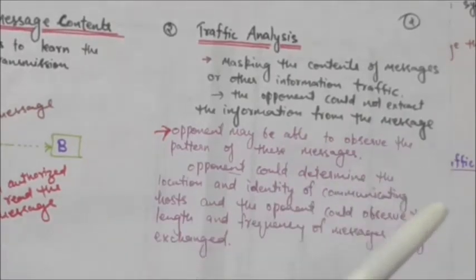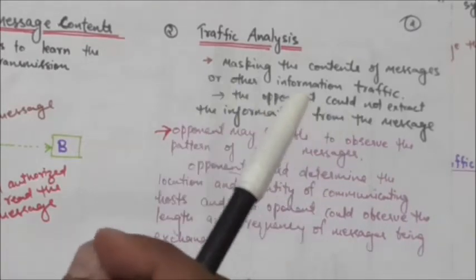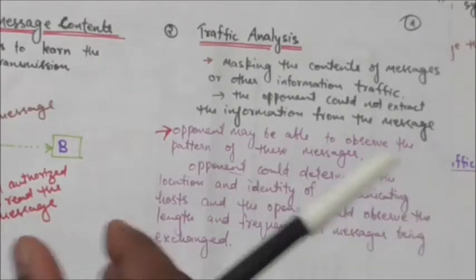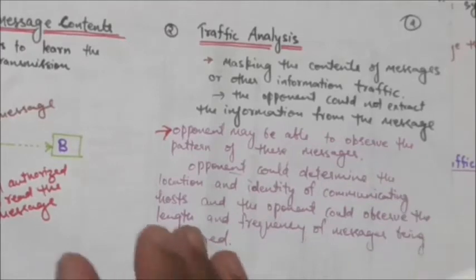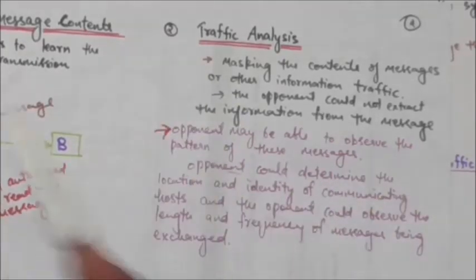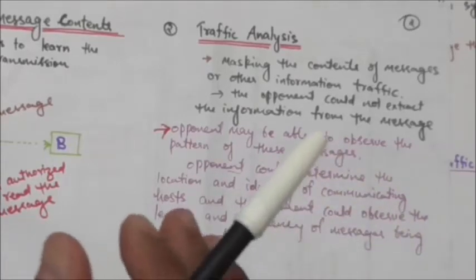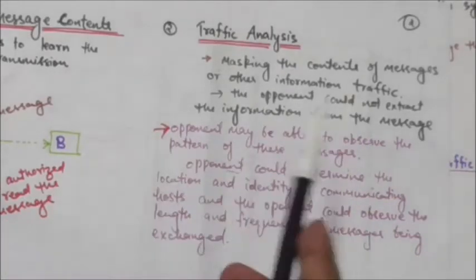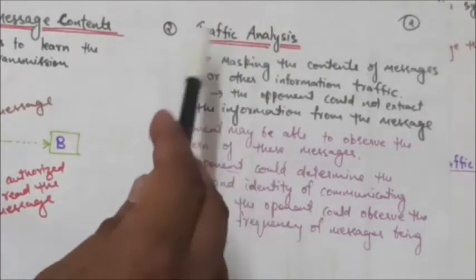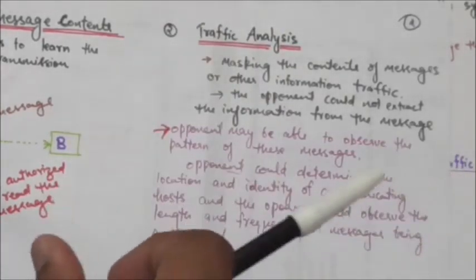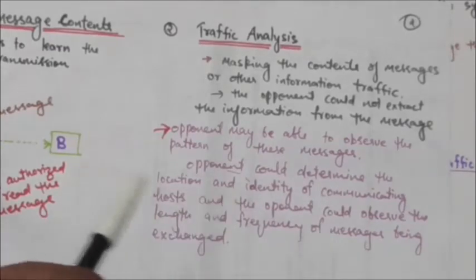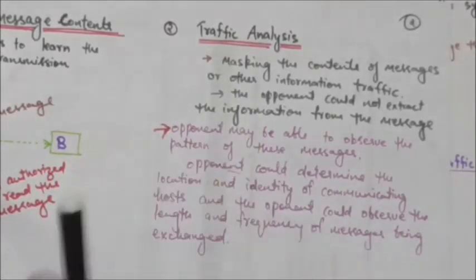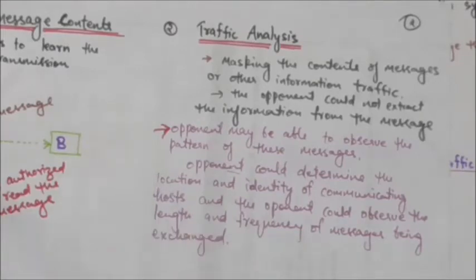Even with masked messages, the opponent may be able to observe the pattern of messages and determine the location and identity of communicating hosts. The attacker could observe the frequency and length of messages being exchanged, and this information may be useful in guessing the nature of the communication. In traffic analysis, the attacker does not read the message directly — by observing and analyzing it, the attacker gains information about the message.